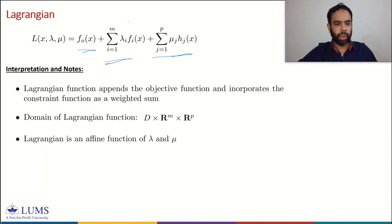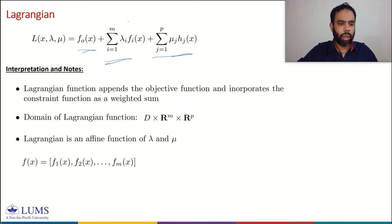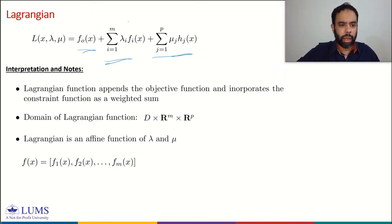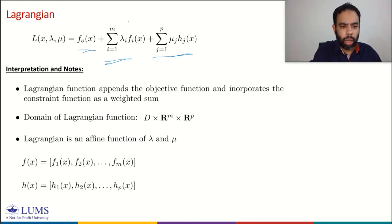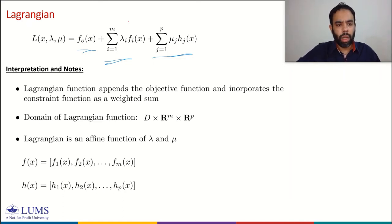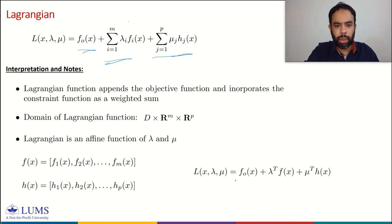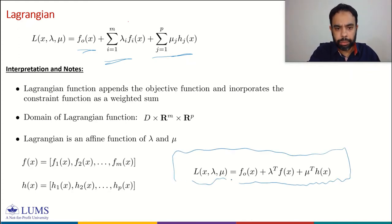We can verify this affine property by defining a vector f(x) grouping all inequality constraint functions and a vector h(x) grouping all equality constraint functions. Then the Lagrangian can be written as L(x, λ, μ) = f₀(x) + λᵀf(x) + μᵀh(x), from which it is readily seen that the Lagrangian is affine in λ and μ.